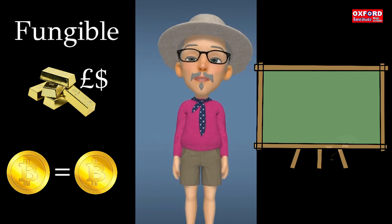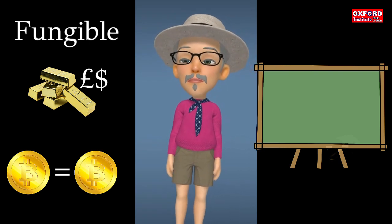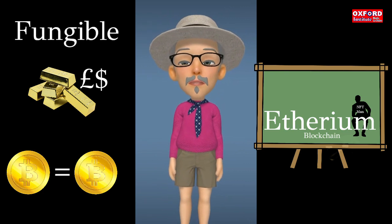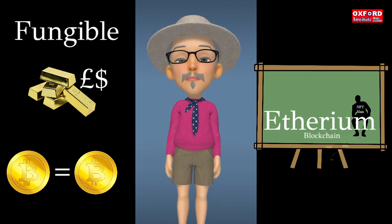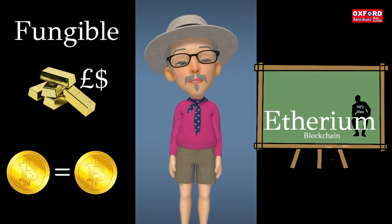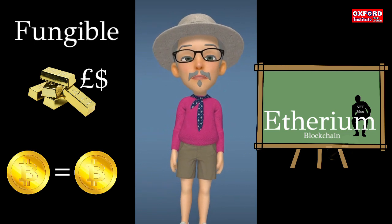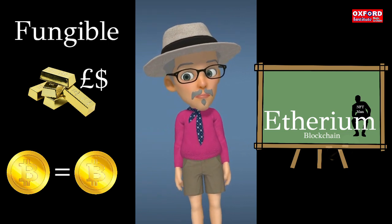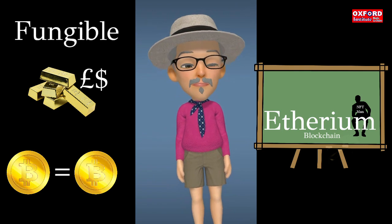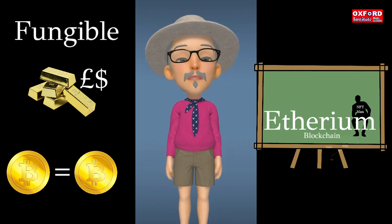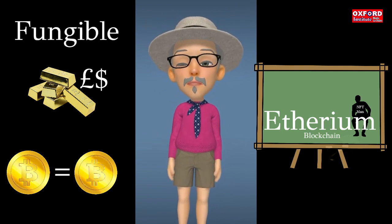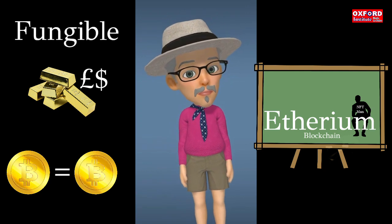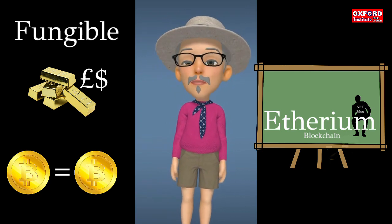Bitcoin inspired a number of other blockchains that operate on the same basic idea but introduced new features — such as Ethereum, where the concept of NFTs was largely developed. Bobby the NFT was thought of on a blockchain like Ethereum.